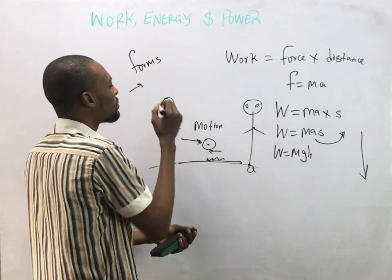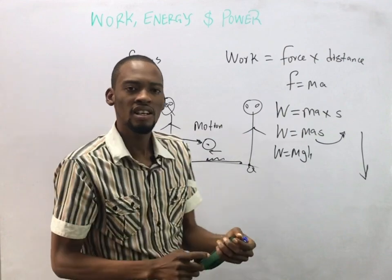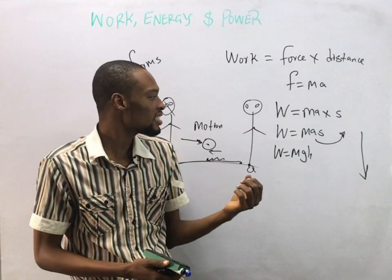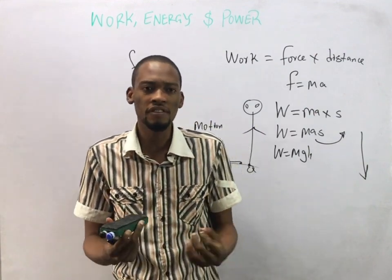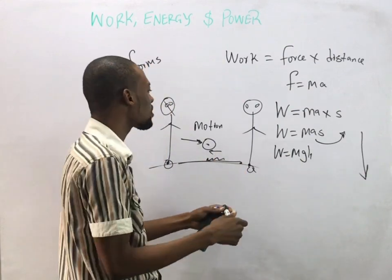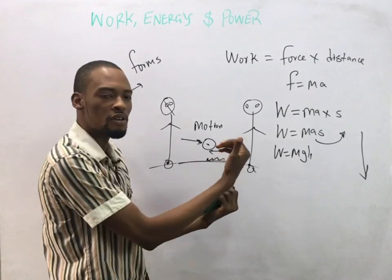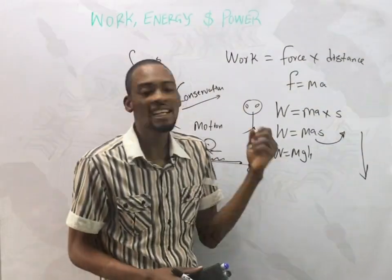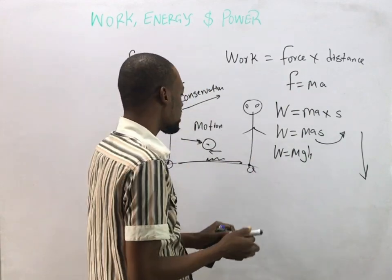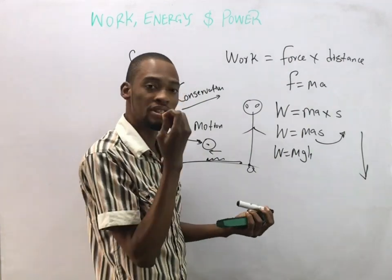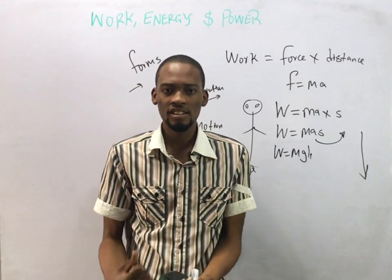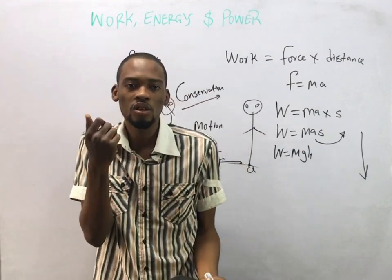We have mechanical energy — the energy in machines — light energy from bulbs, heat energy, chemical energy stored in various forms, and even in the body we have different forms of energy. We have gravitational energy, which is the force bringing things down. Energy cannot be destroyed; it can only be changed from one form to another.